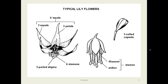The stigma is of course in three parts. The capsule is three-celled. The anthers do generally extend quite a ways beyond the tepals as a general rule.